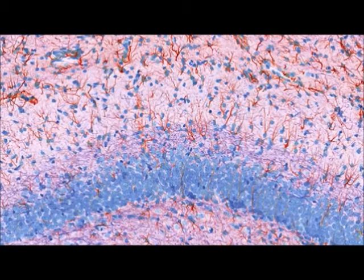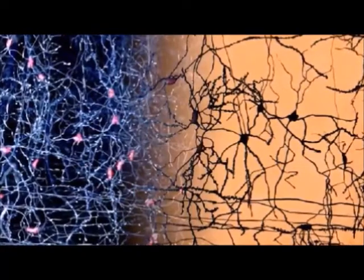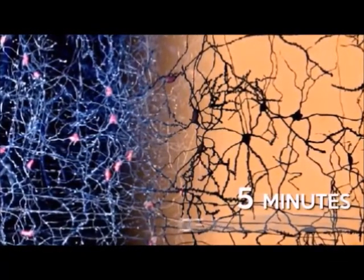Brain tissue needs both oxygen and glucose to function. It uses 20% of the blood's oxygen and glucose, and brain cells begin to die after around 5 minutes of no oxygen.